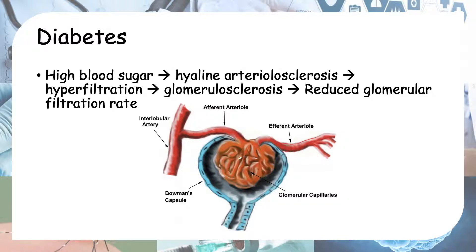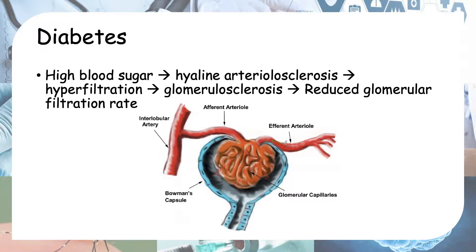Blood comes in through the afferent arteriole and exits either through filtration or the efferent arteriole. Because hyaline arteriolosclerosis preferentially affects the efferent arteriole, there is thickening inside that artery. As a result, less blood can exit through the efferent arteriole, and more blood is diverted into filtration — this causes hyperfiltration, meaning too much blood is going through filtration.